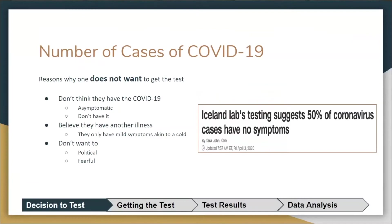There are a couple of reasons why someone would not want to get a COVID-19 test. A study from Iceland found that 50% of COVID-19 cases have no symptoms at all — so a person may not get tested because they're asymptomatic. They may think they have another illness, a common flu, or a mild cold. Or they just don't want to — there could be political reasons, or they may not believe the virus is real.